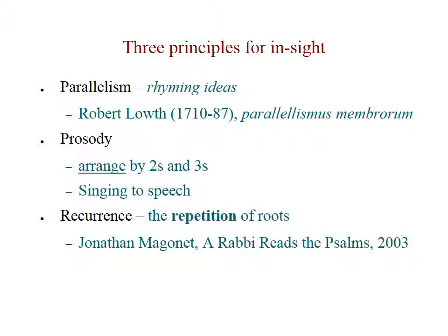Prosody is the art of displaying poetry. A starting point in Hebrew poetry is to see the lines of a psalm in twos and threes and sometimes fours. Poetry is also defined as singing to speech by the 1906 Jewish encyclopedia. We will consider the music briefly later. The third principle is recurrence — the repetition of words sharing a common root. These words have shared consonants that make them sound alike. They are the assonance, a part of the technique that ties the poem together. Recurrence is also a relatively objective observation.